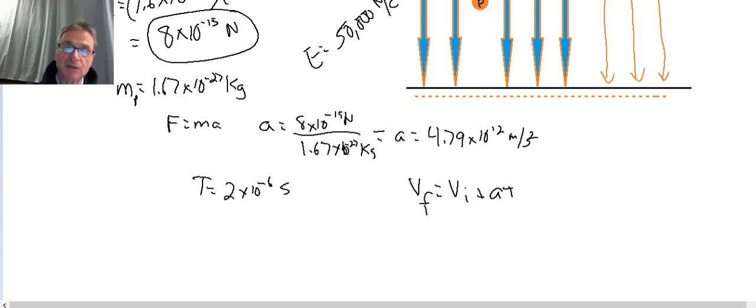And in this case, V initial is zero. We'll assume that it started out at rest. The acceleration we have, the time we have. And so our V final is simply going to be zero plus the acceleration 4.79 times 10 to the 12th meters per second squared, times T, which is 2 times 10 to the minus 6 seconds.